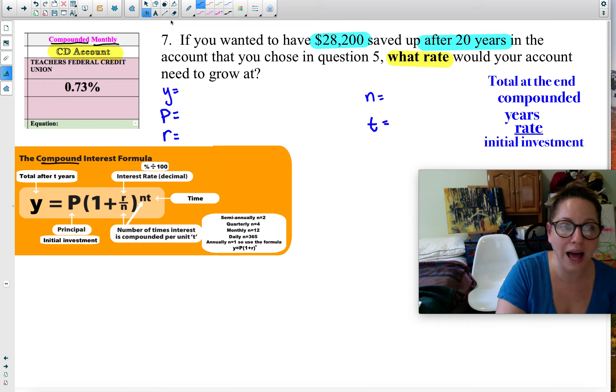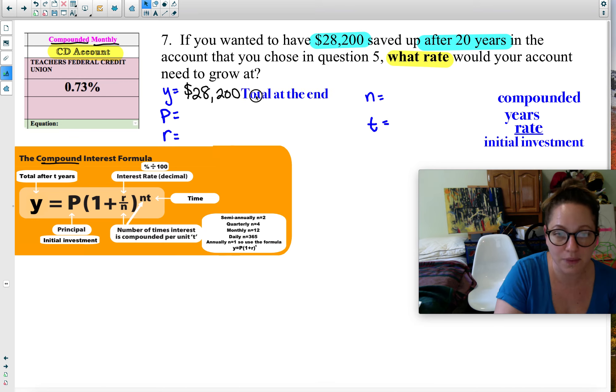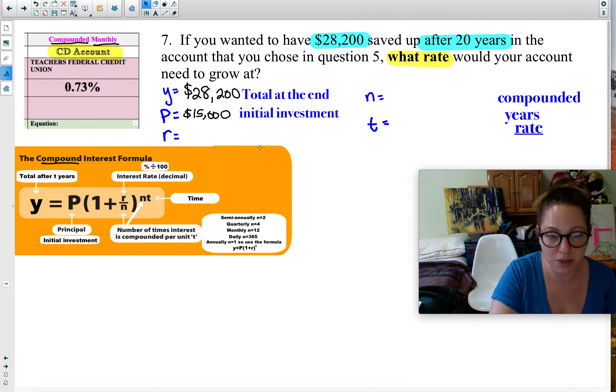Y is the total at the end. So it's the total at the end of the 20 years, and my goal is to have $28,200. That's the total at the end. Next, the P, that's the principal or initial. How much did I start with in the account? I started with the $15,000 that my long lost uncle gave me. We all started with that amount. That was my initial investment.